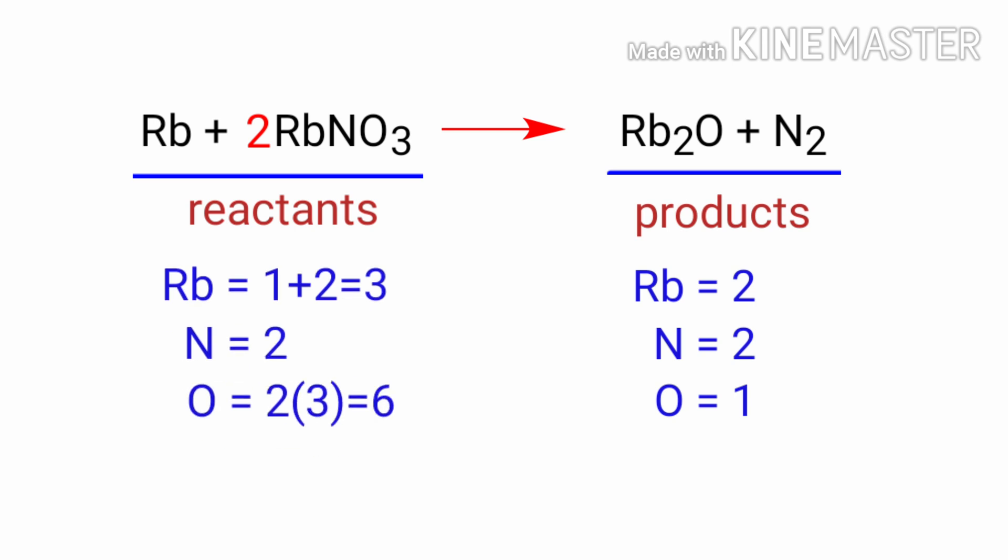Now we need to balance the oxygen atoms. To do this, we need to put a coefficient of 6 in front of Rb2O. The oxygen atoms are balanced.